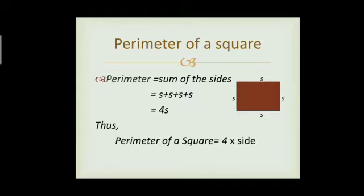Now perimeter of square. A square is a closed figure with four sides where all sides are equal. Perimeter is the sum of the sides. All sides are the same, let's call it S. So S plus S plus S plus S equals 4S. Since S is the side of the square, the perimeter of a square is 4 multiplied by side.